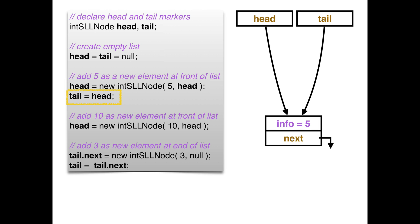So then tail equals head. So tail now is also a reference to this element. So I have both head and tail somehow marking this particular element. I have a list of one. So therefore, the tail and the head are the same.